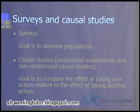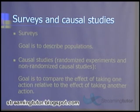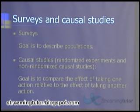There are two types of studies generally. The first is a survey, and the second is a causal study. In a survey, what we want to do is describe a population. For example, we want to learn what's the average income of doctors in the United States, or what's the difference in the GPAs of men versus the GPAs of women in your university. That's a survey — describing populations.